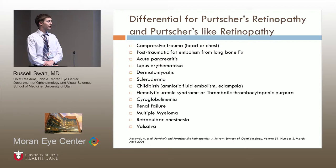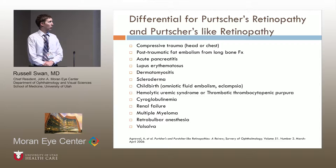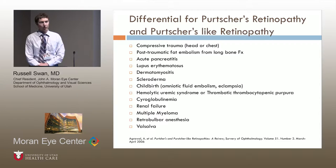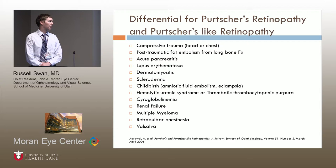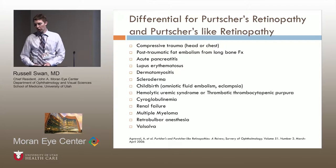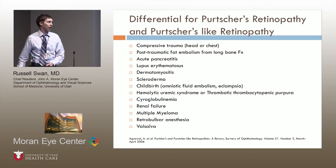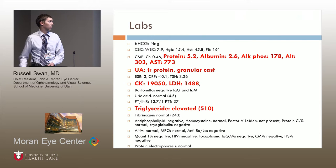Our differential diagnosis was very broad initially. She didn't have any known trauma, but a number of autoimmune conditions and blood dyscrasias were certainly in our thought process. We did a pretty thorough workup along with the rheumatology team and the pediatric team to sort things out.